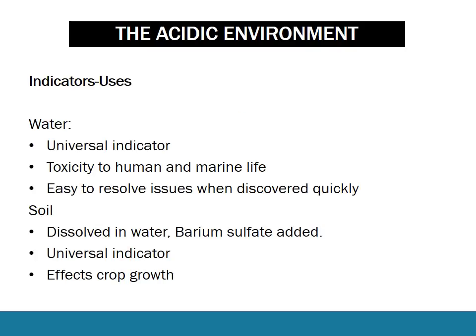In terms of indicator uses, there are two that are commonly asked. Indicators are used to test the pH of water, such as in pools and lakes. We use a universal indicator because that's just the easiest to use. We can check whether water is toxic to human or marine life, and we can do that really quickly. It's really beneficial that we have the ability to just drop some indicator in water and see the pH, because then we can quickly see that there is some sort of pollutant and try to resolve the issue.